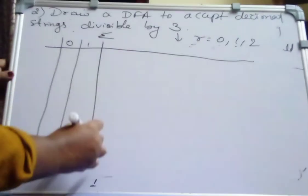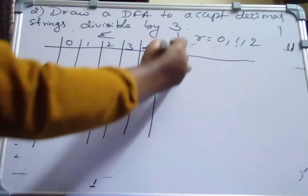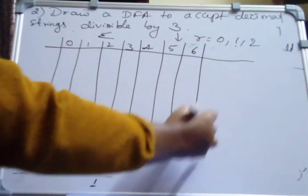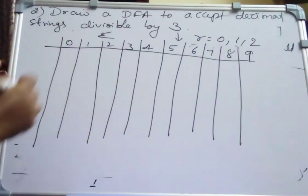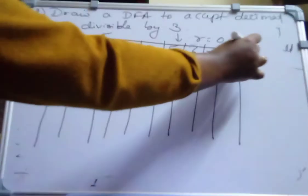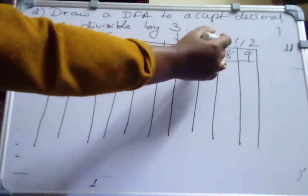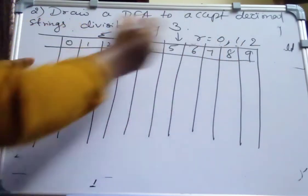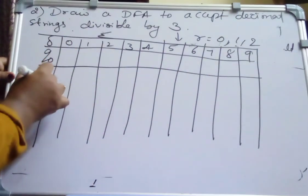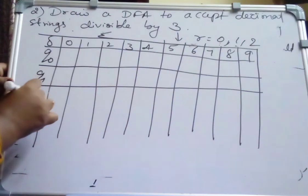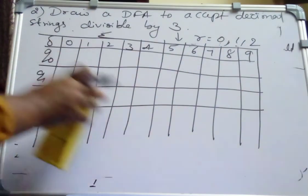So construct the DFA. The input symbols 0, 1, 2, 3, 4, 5, 6, 7, 8, 9. We have 9 input symbols. Write all the 9 input symbols. Then what are the states we have? The states is equal to possible number of reminders, 0, 1, 2. So it means we have 3 states, Q0, Q1 and Q2. Name the states as Q0, Q1 and Q2.